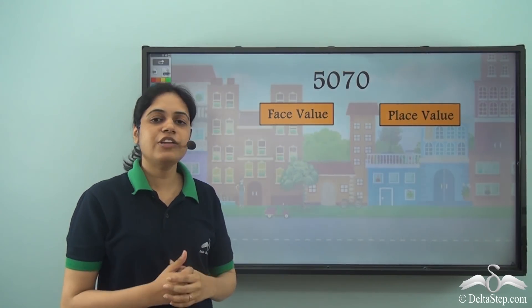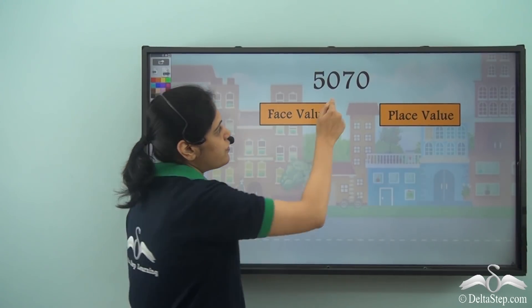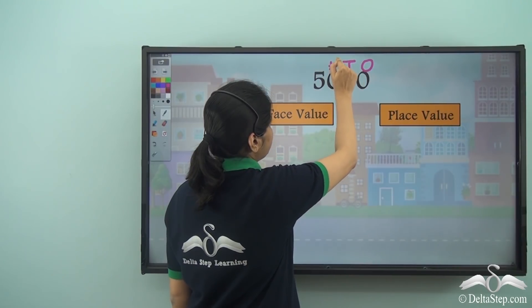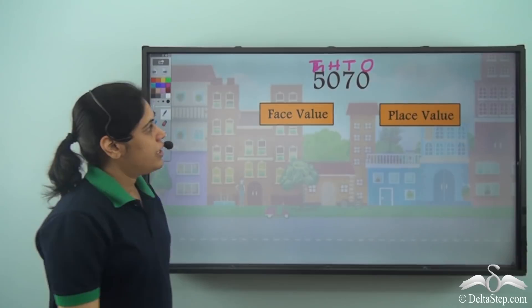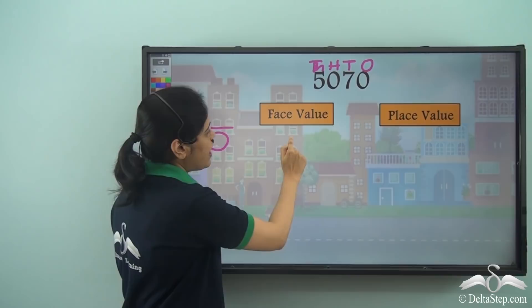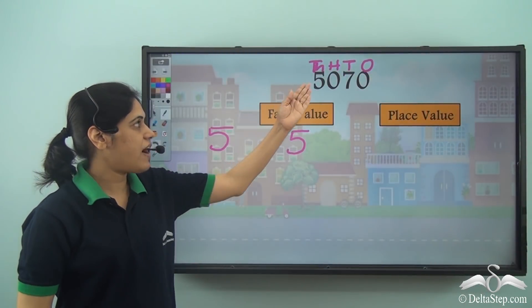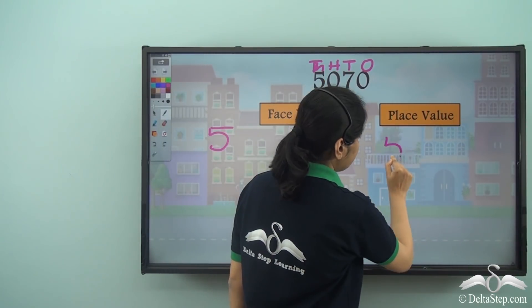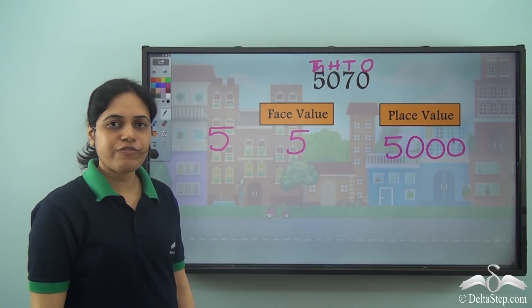Now let us find the face value and place value of the digits of this number. Let us write 1s, 10s, 100s, and 1000s. Now 5 is in the 1000s place. Face value of 5 is 5. Place value of 5 is 5000, because 5 thousands means 5000. This is the place value of 5.